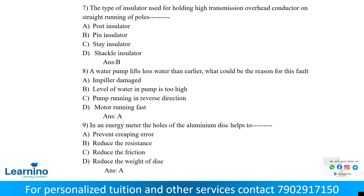The type of insulator used for holding high-transmission overhead conductors on straight running poles. The options are post insulator, pin insulator, and shackle insulator. Pin insulator is used for telegraph and utility poles at less than 33 kV. Shackle insulator is for low-voltage distribution. The answer is pin insulator, option B.